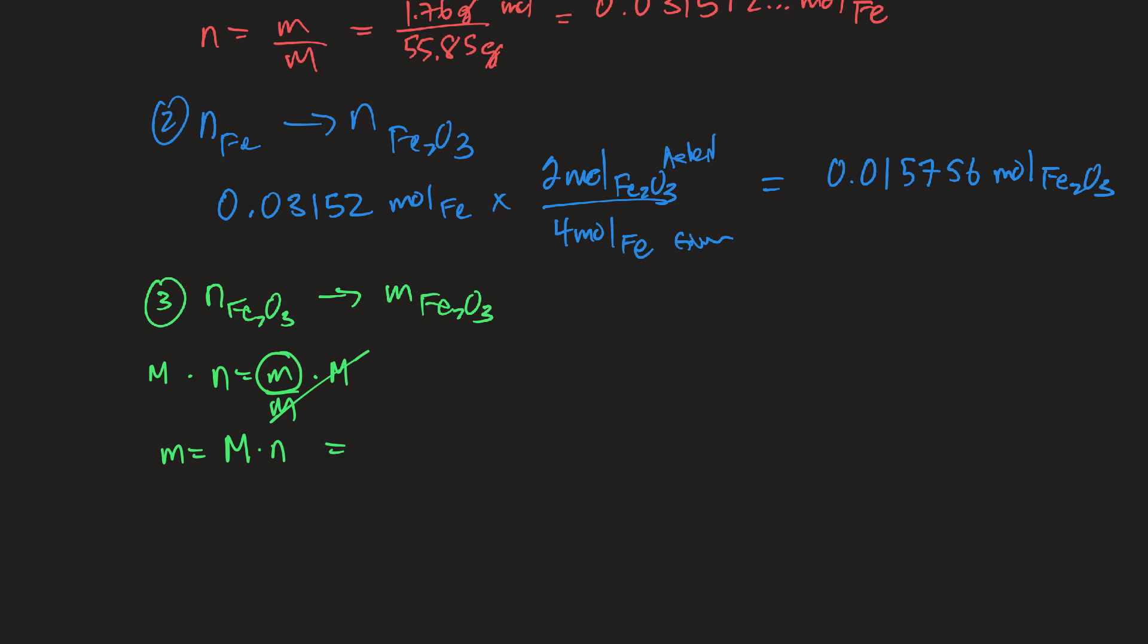So the molar mass of Fe2O3. So I have two Fe's. So that's two of those. And then three oxygens, three times 16 is 48. Okay, so if I add that, that's 10, 17, 19, 15, 15, 159, 70, I think.